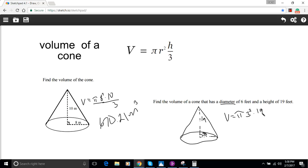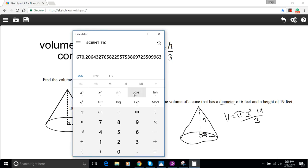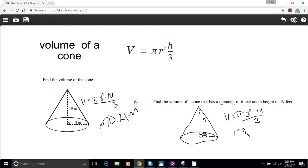We'll use our calculator again to calculate this one. Start with pi, and 3 squared is 9, multiply that by 19, then divide by 3. We get 179.07. That's in feet, and since this is volume, it's cubic feet. So that is how to calculate the volume of a cone.